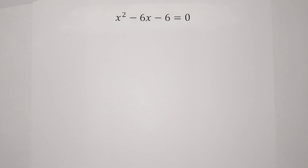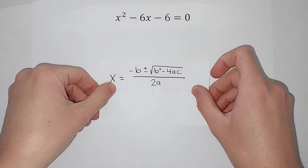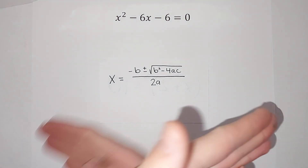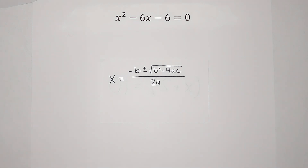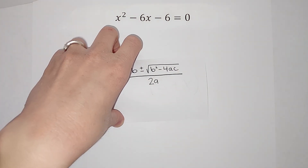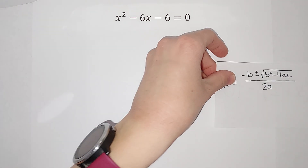This example I'm going to use the quadratic formula. If you want to see me do the same problem where I complete the square, I'll link a video in the corner. But we're going to use the quadratic formula, which looks like this. Now there's a song — Pop Goes the Weasel — x equals negative b plus or minus the square root of b squared minus 4ac, all over 2a. You're welcome. I'm going to regret singing that later, but there you go.